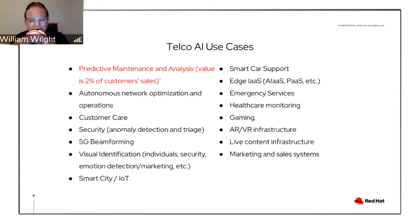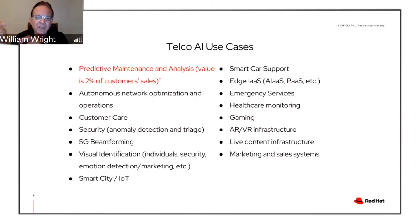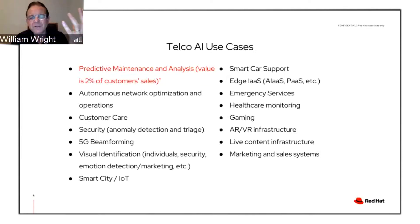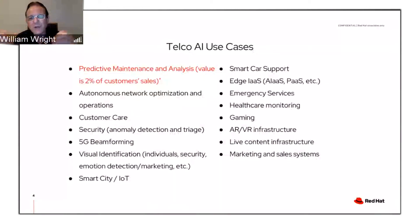Emergency services is really interesting too — the ability to triage an accident while an ambulance is on its way to a location. It can take in individual health data through someone's Apple Watch, the location of the car, and the kind of damage sustained. There are all these different forms of analysis that could take place as resources are applied to an emergency situation, helping really triage and triangulate all the necessary aid to help everybody at that site.